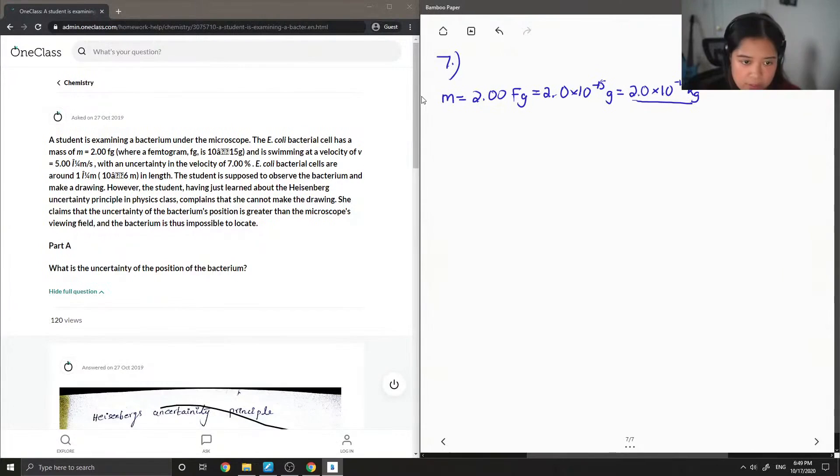They also give us the velocity, which is 5.00, think it's supposed to be micrometers per second, but then I'm going to convert that to meters per second.